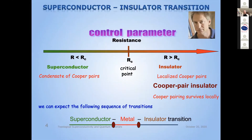This was a very important thing to which we come back later. A beautiful scenario for what is going on at this transition was proposed by Matthew Fisher. The picture he offered was that in the superconductor, you have a condensate of Cooper pairs; if vortices are somehow pinned, you have a perfect superconductor. As you increase the resistance — increasing effects of localization — Cooper pairs become localized and vortices form a condensate. This statement was so much ahead of its time and so beautiful that it was not even noticed.